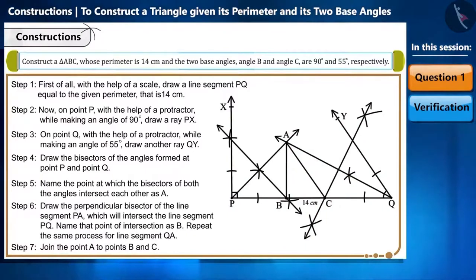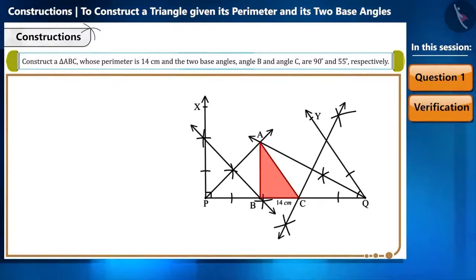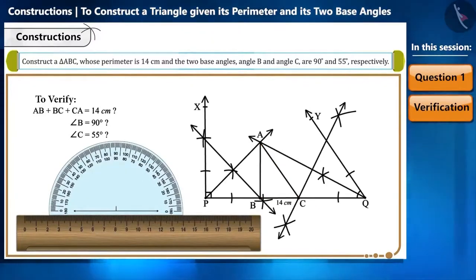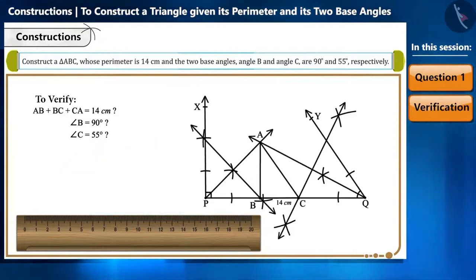Friends, now we will prove this mathematically. The sum of the three sides of the triangle we had to construct is 14 centimeters. So, now we will check whether the sum of the sides of the triangle we constructed is 14 centimeters. Also, the measurement of base angles is 90 degrees and 55 degrees or not. We can verify this by measuring these sides and angles with the help of a scale and protractor.